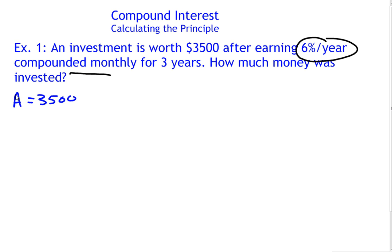So in order to do this question, I guess we don't know what the principle is. In order to calculate i, we need to figure out the rate per compounding period. So with 6%, we can write that as decimal 0.06.